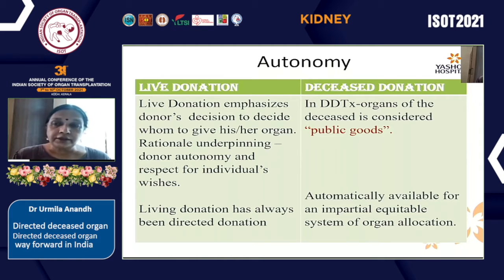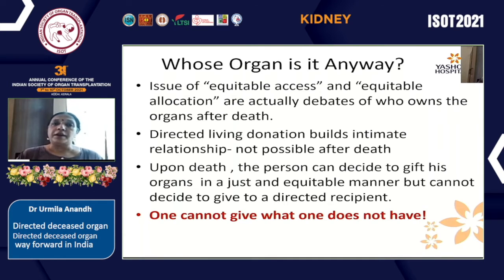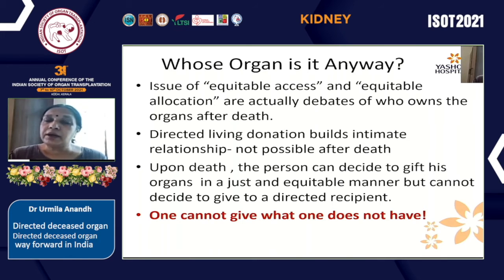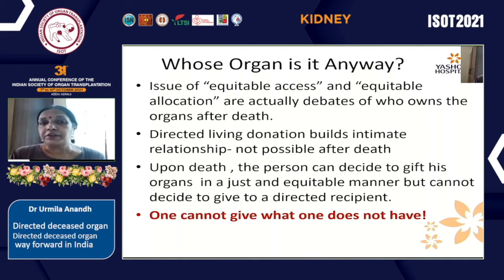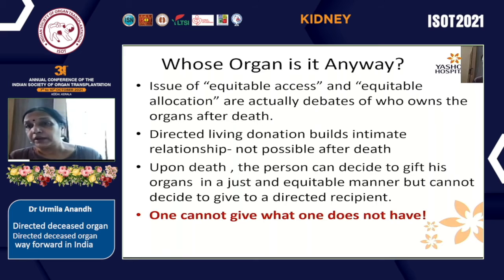Live donation is directed, whereas deceased donation is non-directed, and this is because of the ethical ambiguity as to whose organ it is anyway. These issues of equitable access and allocation are debates about who owns the organs after death. With direct living donation, it is believed to build intimate relationships, and this is not possible after death. Upon death, the person can decide to give organs in a just and equitable manner but cannot decide to give to a directed recipient — because of the ethical construct that one cannot give what one does not have. So in your death, the organs do not belong to you.